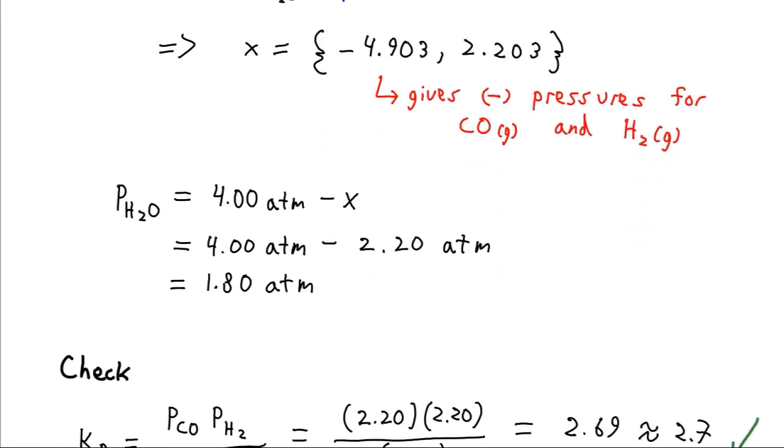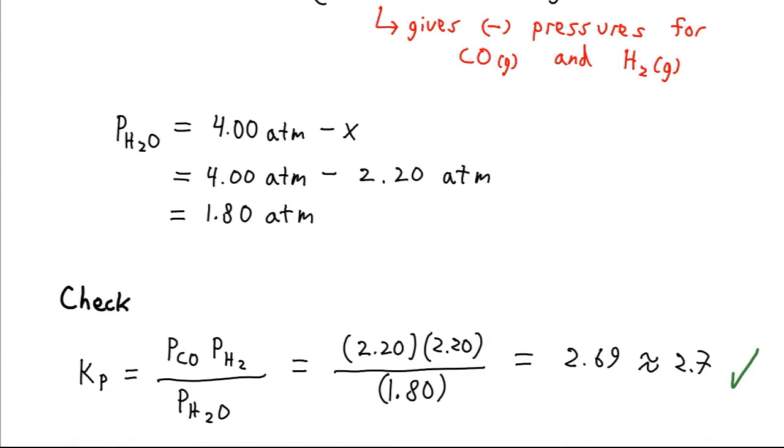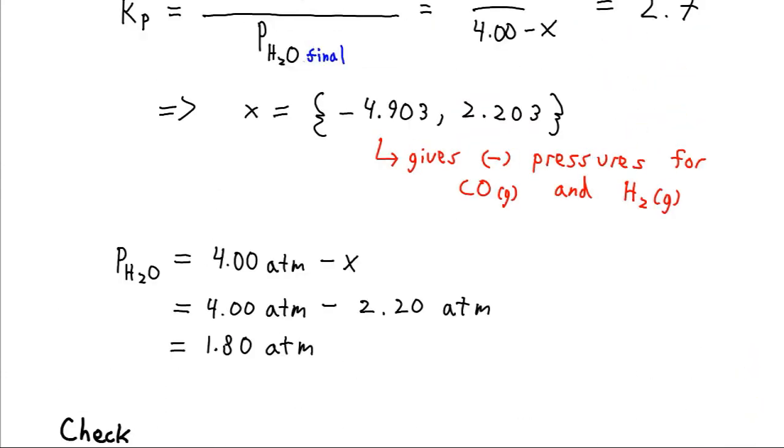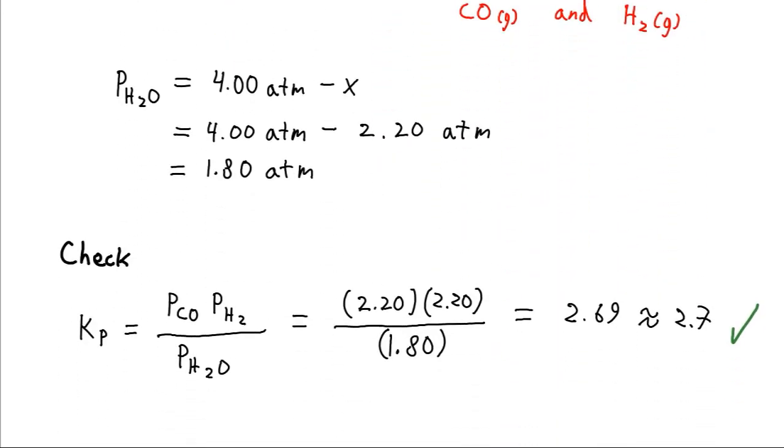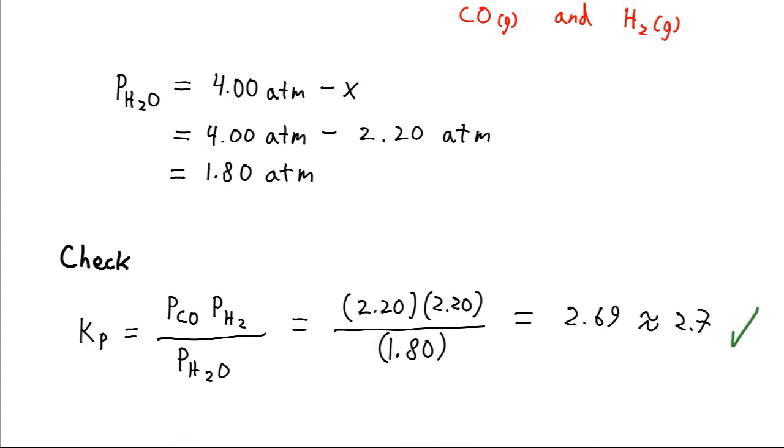And, as usual, we can double check our results by plugging in the equilibrium pressures that we calculated. In this case, the equilibrium pressures for CO and H2 are just x, so they're going to be 2.2 atmospheres. So we plug in those pressures for CO and H2 and the one that we calculated for H2O into our expression, and we get 2.69, which is very reasonably close to 2.7. So that's a pretty strong confirmation that we calculated the correct equilibrium concentration of H2O.